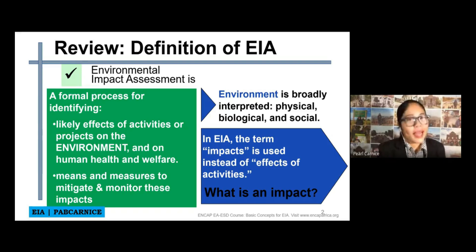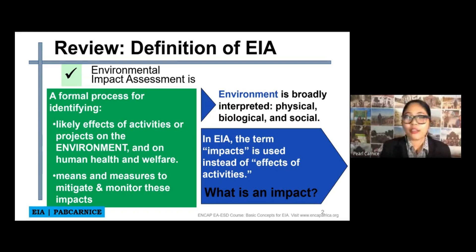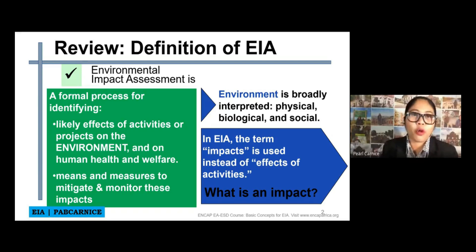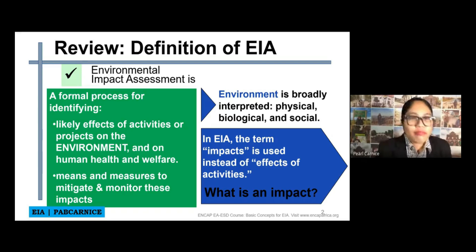In every kind of progress and every kind of development — and civil engineers are very aware of this — there is always a positive and a negative impact. If we would like to have zero negative impact, I don't think there is any possible development or progress that could happen. So if there is always a negative impact, what we can do is measure it and find ways to mitigate that impact — to lessen the impact to the environment, to human health, and to all living organisms.